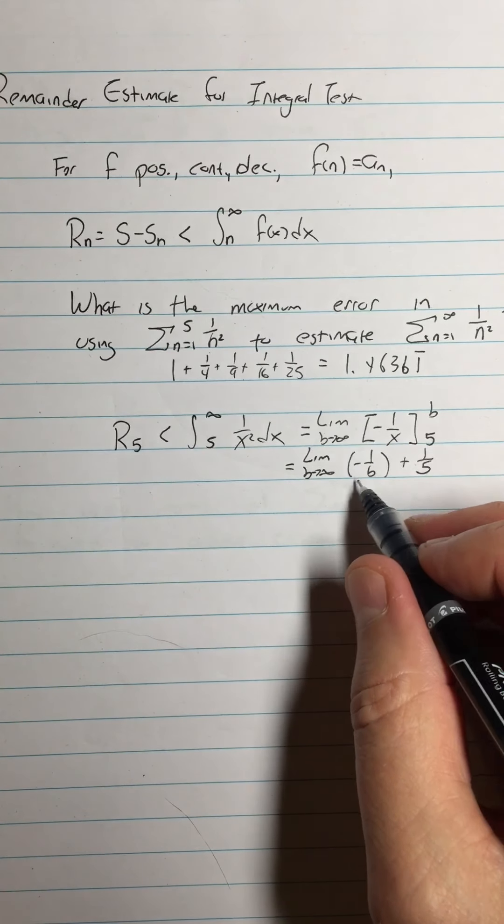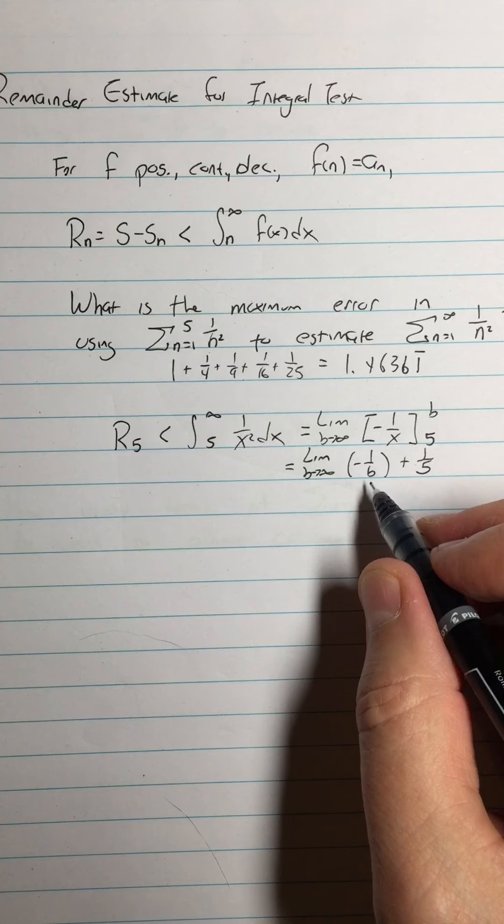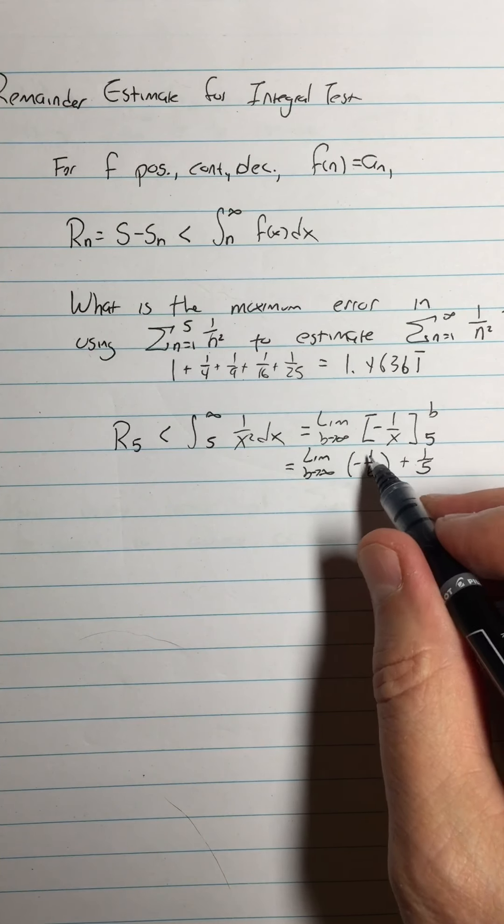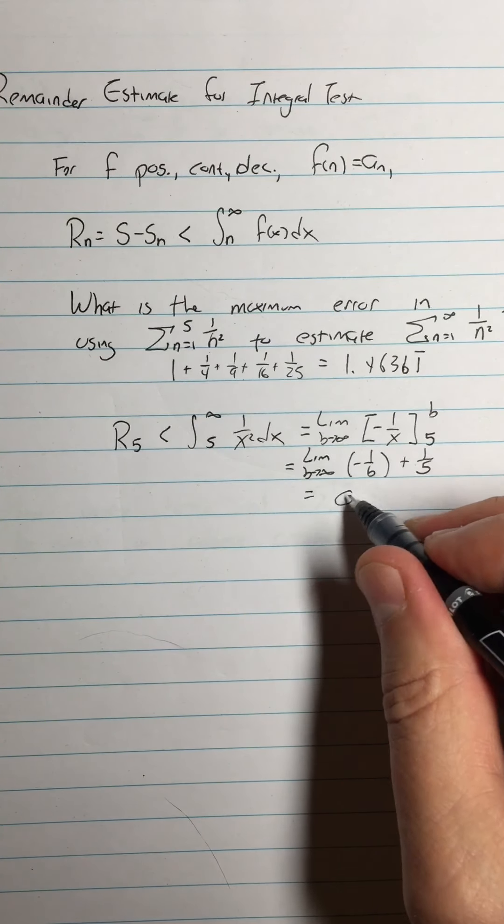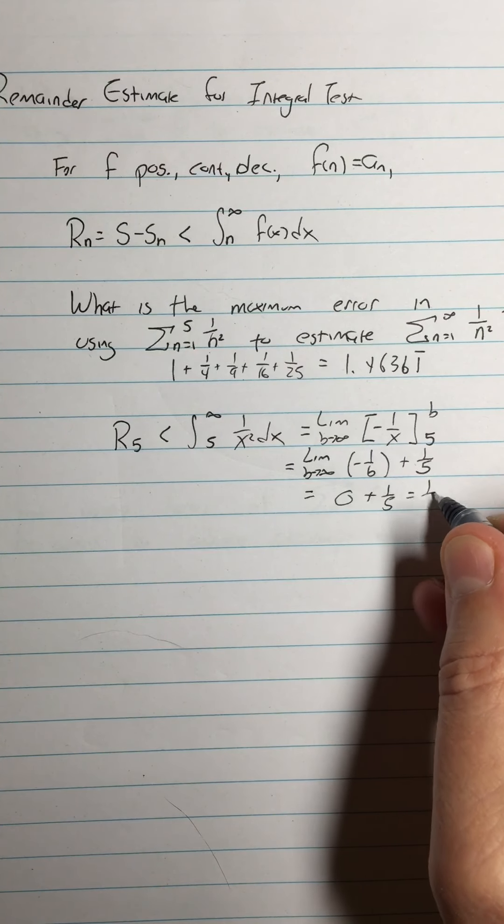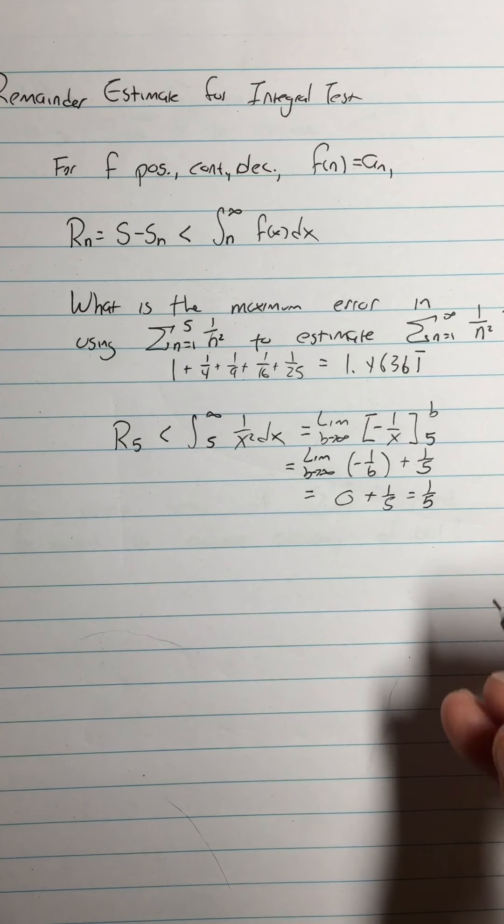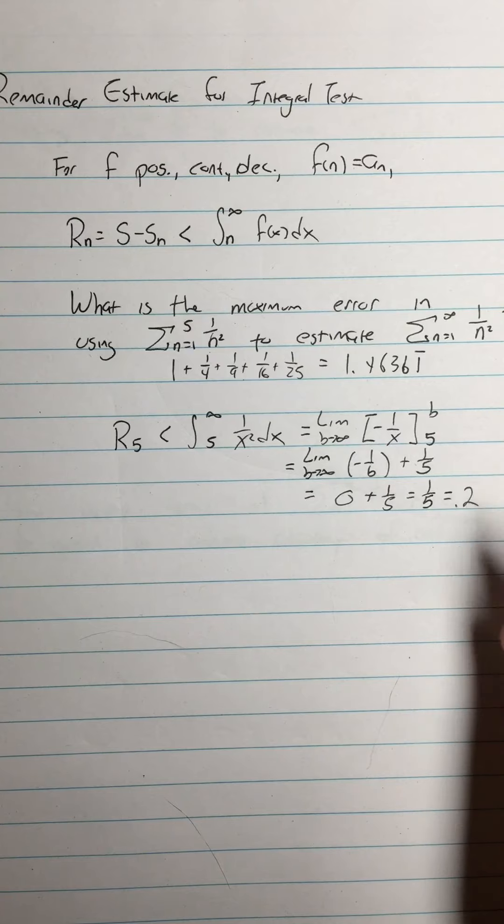And then this limit, since b is approaching infinity, the numerator is bounded, the denominator is expanding without bound. This equals 0 plus 1 fifth equals 1 fifth. So in fact, I am within 1 fifth of the actual value.